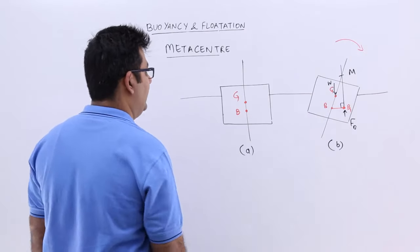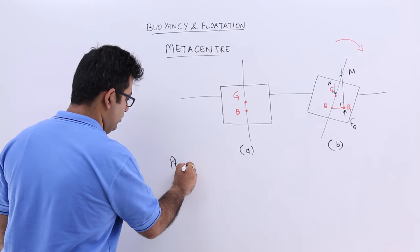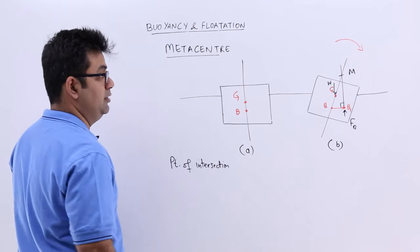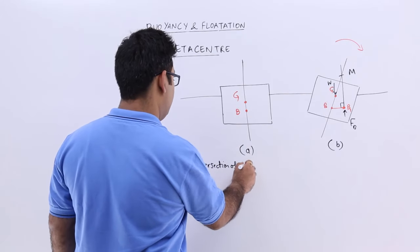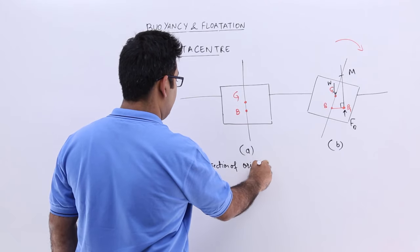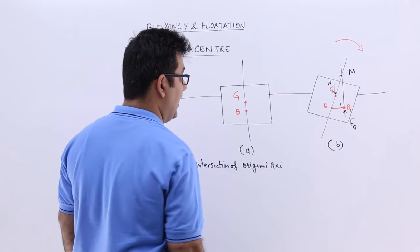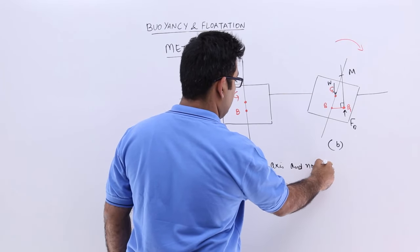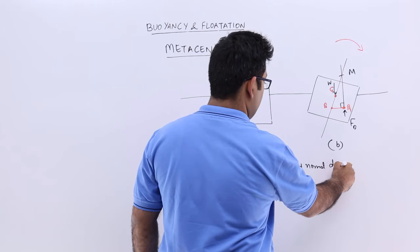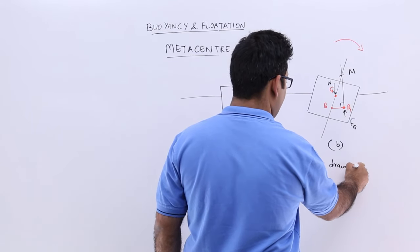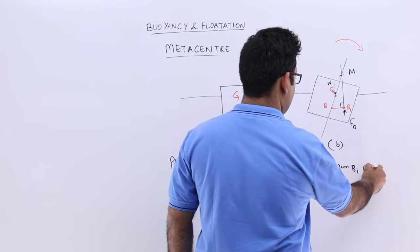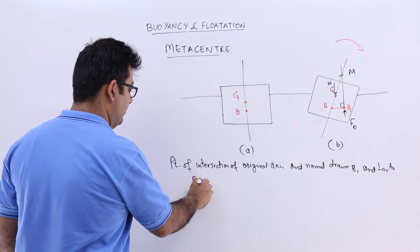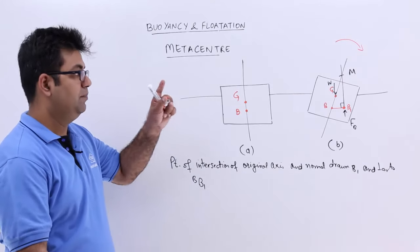So metacentre is the point of intersection of the original axis and normal drawn through B1 and perpendicular to the line segment BB1. So that is your metacentre.